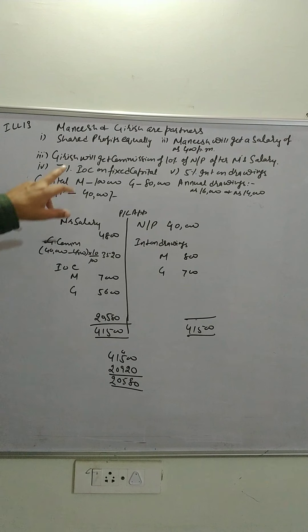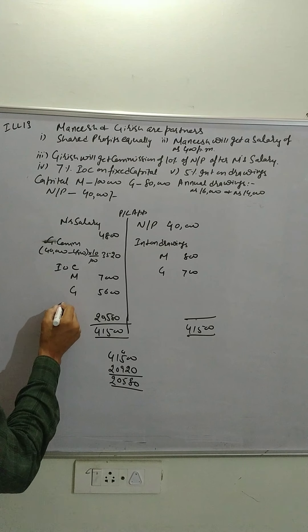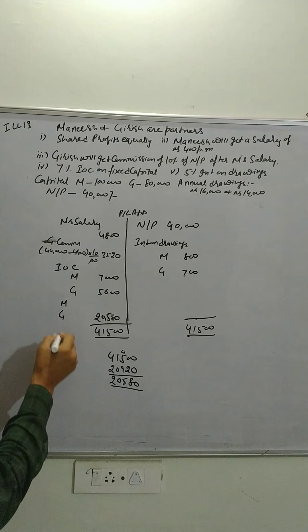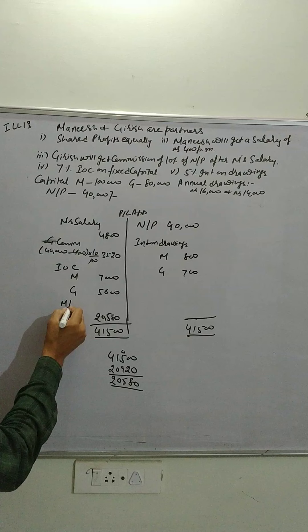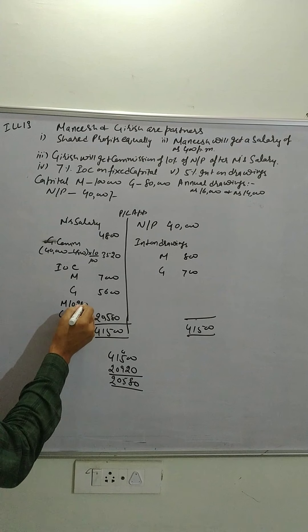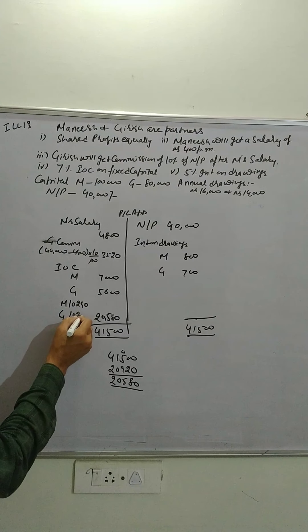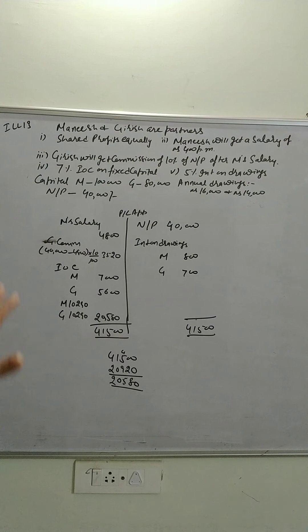Now profits are to be shared equally, equally means M and G 2,290, 10,290. So this is how this question is to be done.